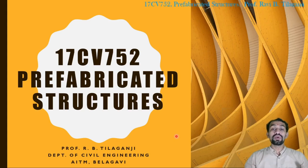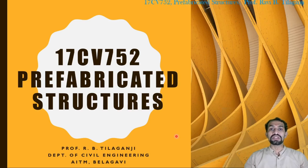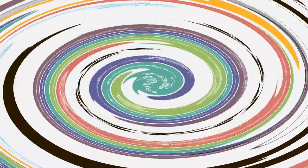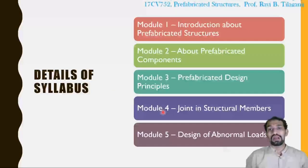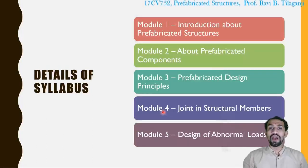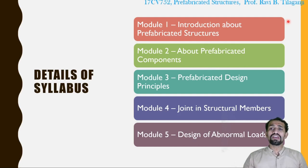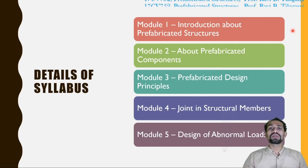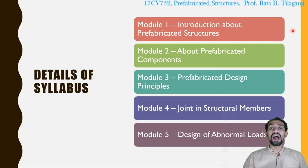So let us get into what is in detail syllabus for the particular semester. Details of syllabus. Module 1 is introduction about prefabricated structures. Module 1 will give us in detail about the RCC, what is known as prefabricated structure, how it is separate or different from RCC structure or from steel structure, and how is the upcoming future for the prefabricated structures.